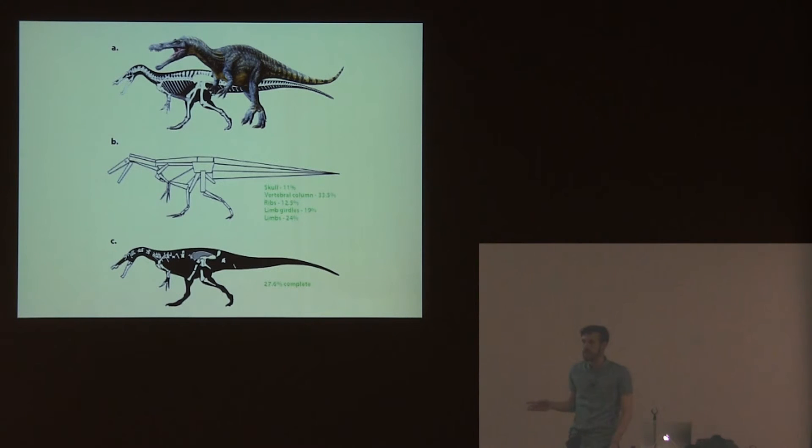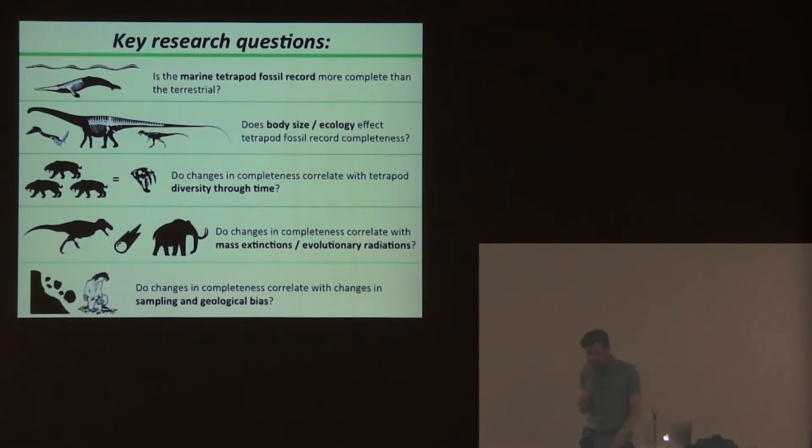I don't want to just look at non-avian theropods. I want to collect this data for many groups of tetrapods - marine tetrapods, flying, terrestrial, anything I can get my hands on. The point is to address a couple of key questions in relation to our paleontological interpretation.